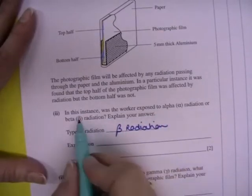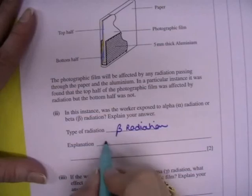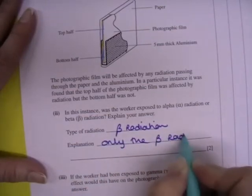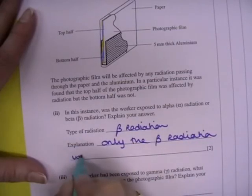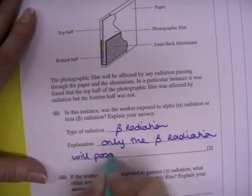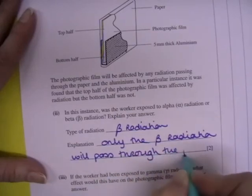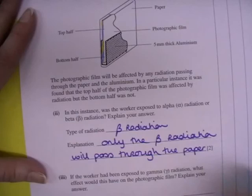Because out of alpha or beta, which was your two options, only the beta will pass through the paper. So one mark for identifying it and one mark for the explanation.